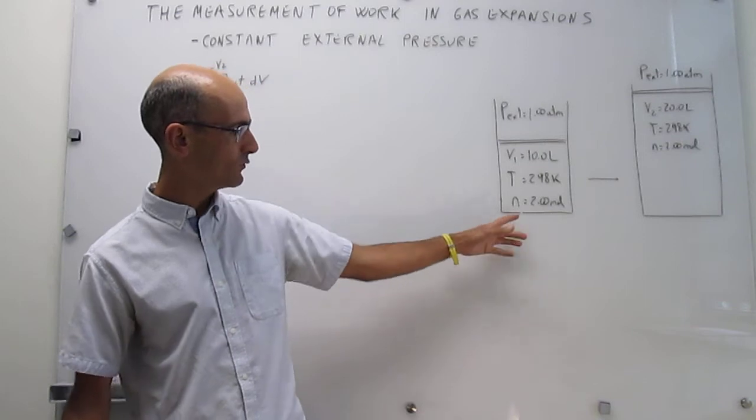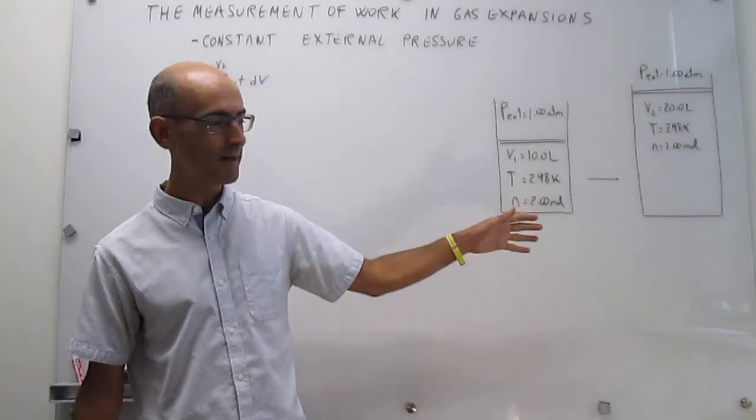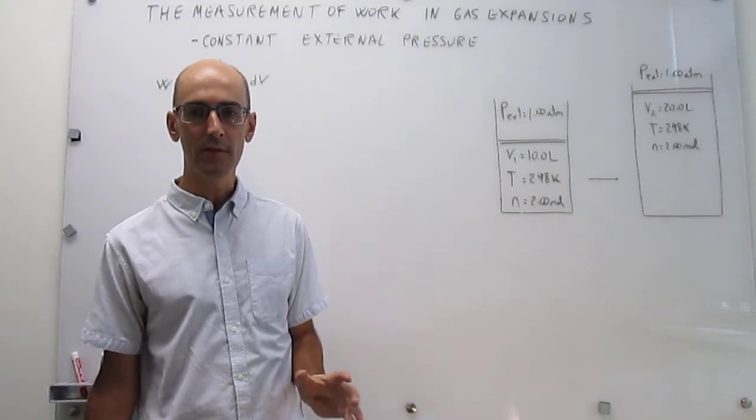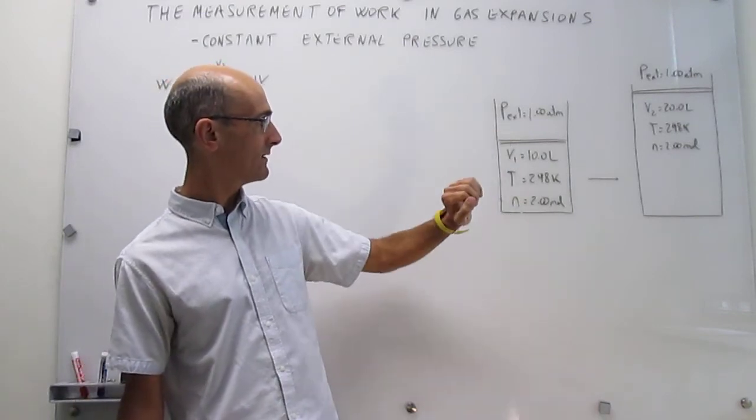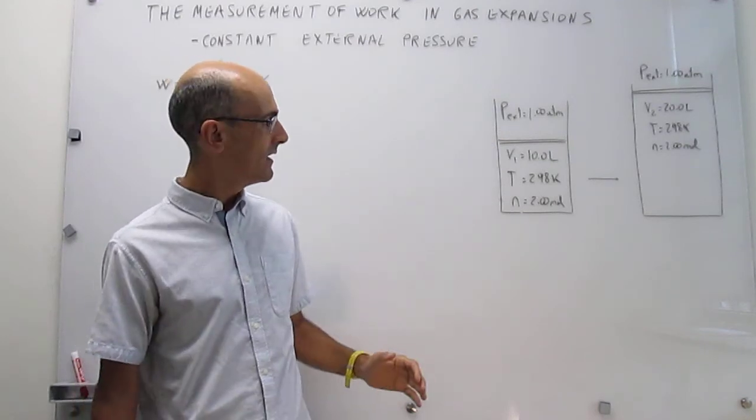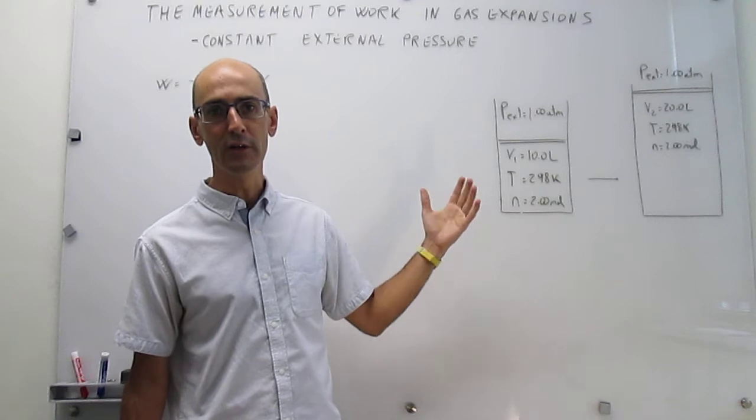So think about this gas: you have 2 moles of an ideal gas, 298 Kelvin, in a volume that is 10 liters. We're going to try to expand that gas against a constant external pressure of one atmosphere, and we're going to do that until the volume doubles.